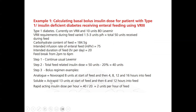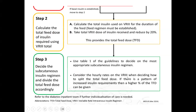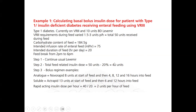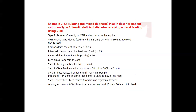For step two, calculate the total feed-related insulin dose: 50 units minus 20% equals 40 units. If using a rapid-acting insulin analog like aspart or lispro, give 8 units at the start of the feed and then at 4, 8, 12, and 16 hours into the feed — totaling 40 units. If using a soluble insulin like actrapid, give 13 units at the start and then at 6 and 12 hours — approximately 39 units. Remember: feed-related doses should not be given within four hours of the feed ending for rapid analog, and six hours for soluble insulin. This type of bolus regimen calculation is commonly asked in exams.